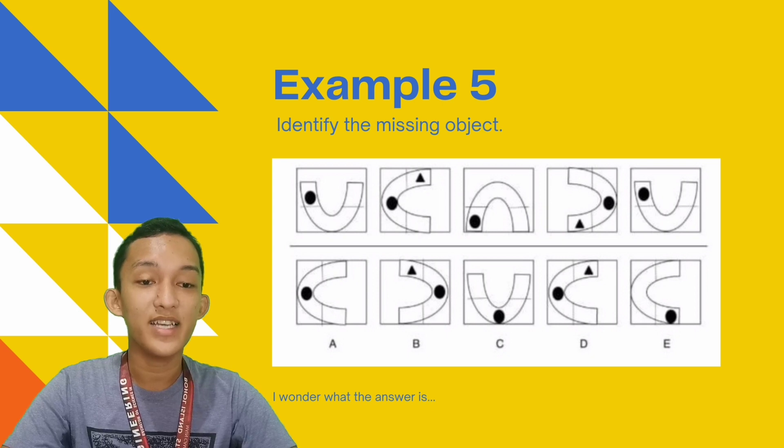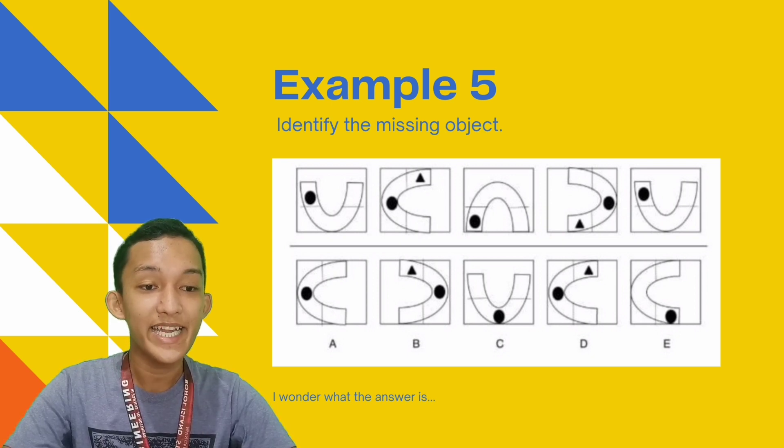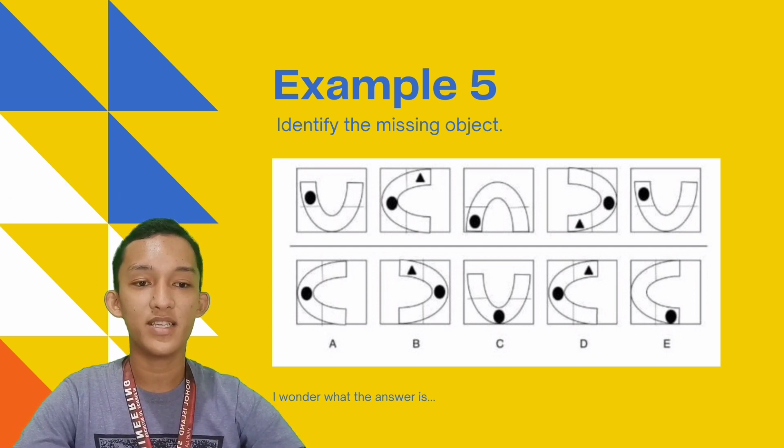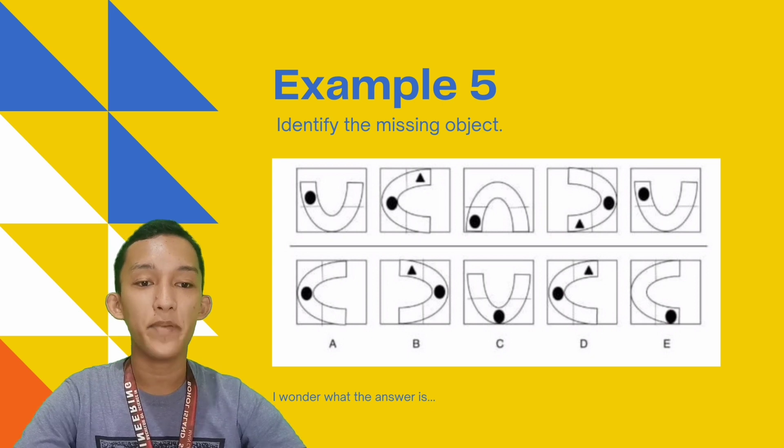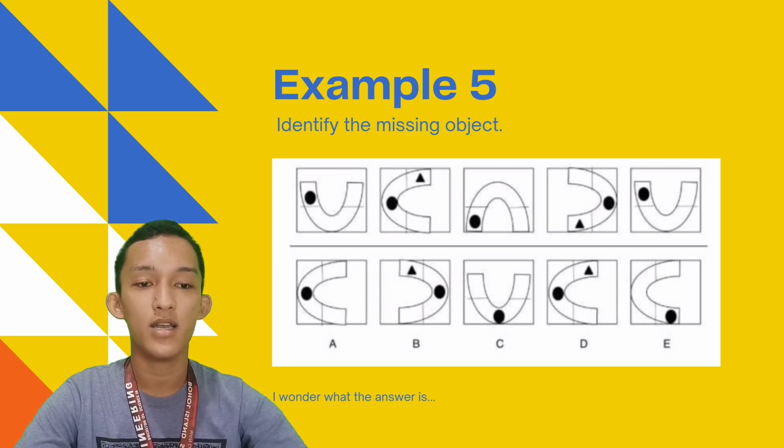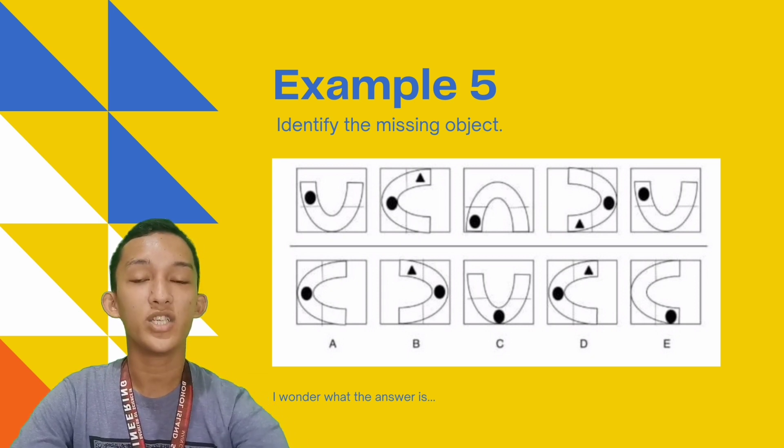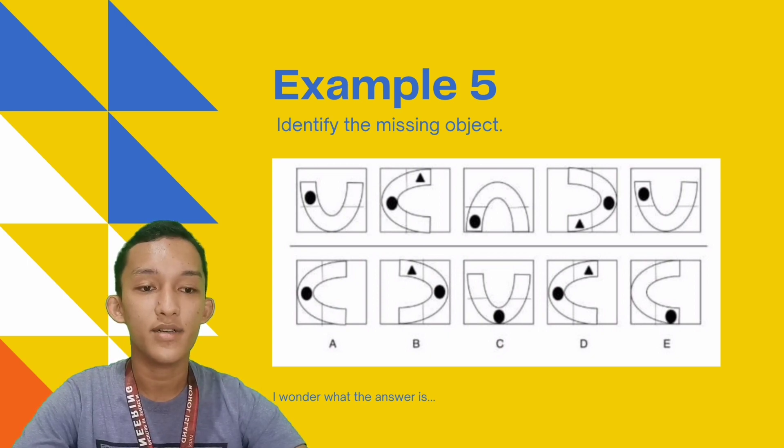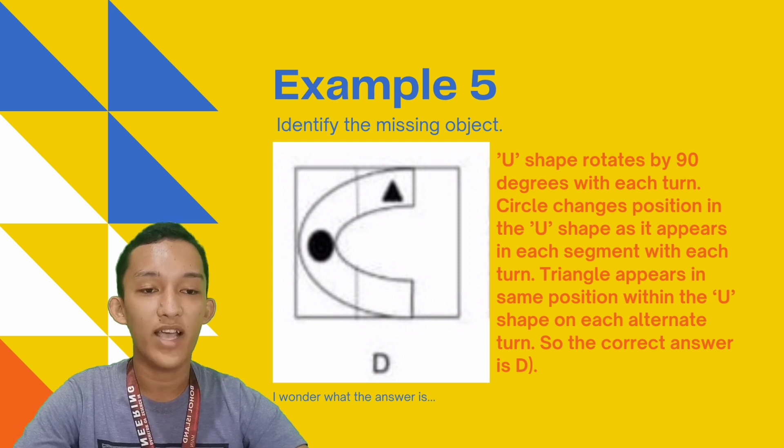And with that condition, only letter A, D, and E satisfies it. Next, the circle changes position in the U shape as it appears in each segment with each turn. The triangle appears in same position with the U shape on each alternate turn. With that condition, only letter D satisfies it. So, our final answer is letter D.